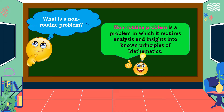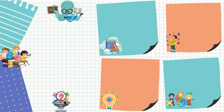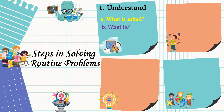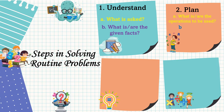These are the steps in solving routine problems. First, we should understand the problem — read the question twice or thrice, know what is asked, and what are the given facts. Second, formulate a plan — consider the following: know what operation or operations are to be used and what is the number sentence.